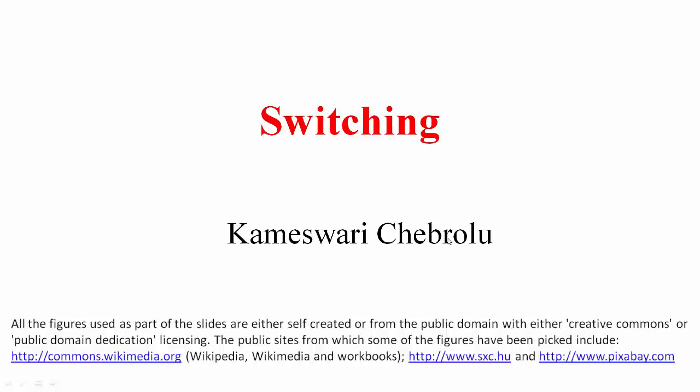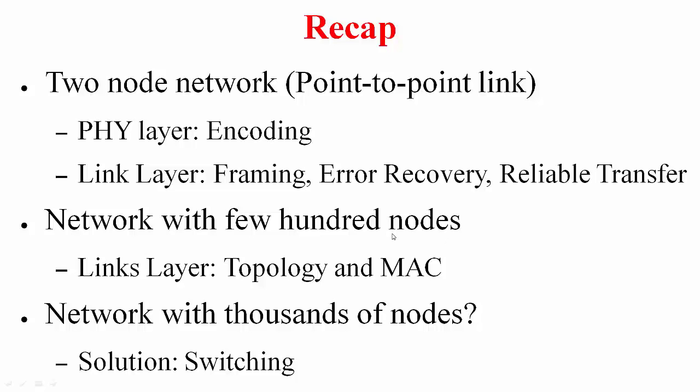We have reached another major milestone in this course. Where are we placed currently? We have looked at the functionality needed to make two nodes communicate. At the physical layer you needed encoding, at the link layer you needed framing, error recovery, and reliable transfer. But how useful is a two-node network? Not much.